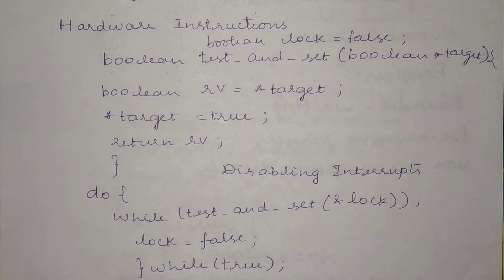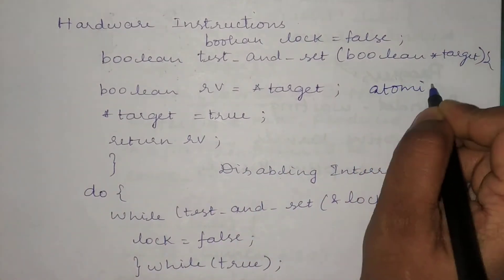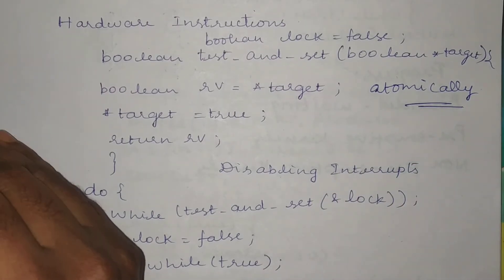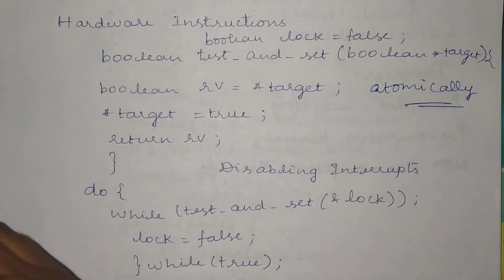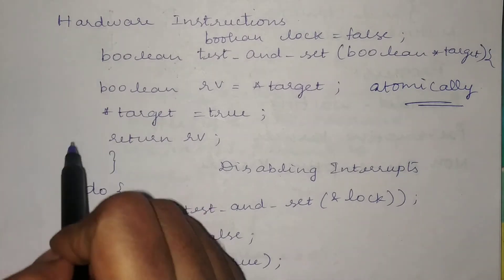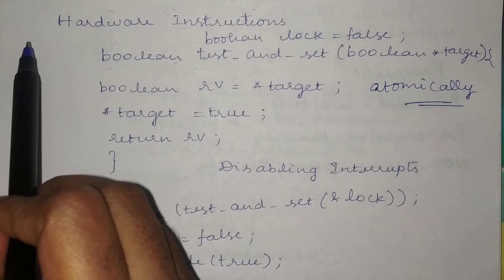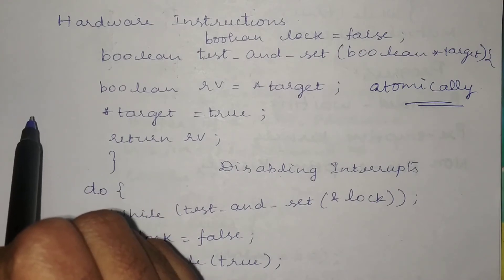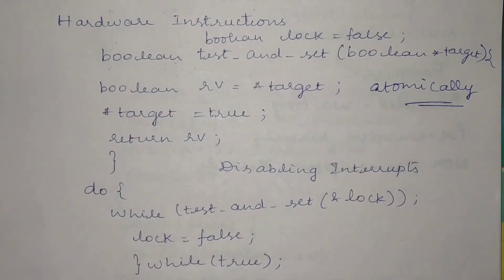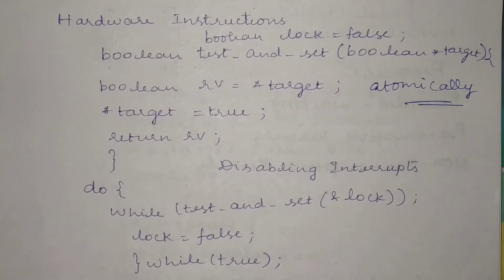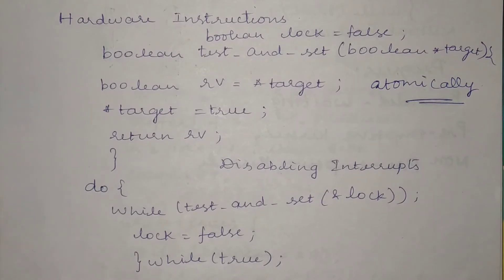Even though disabling interrupts is not feasible, we have a hardware solution: a set of hardware instructions that must be executed atomically. Atomically means once you start executing the first instruction, you should not be interruptable at all until the completion of the last instruction. For example, if you have three instructions in sequence, none of them should be interruptable in the middle. Execution of uninterruptable instructions in sequence is called atomic execution. All these instructions must execute atomically so we can achieve the correct, race-condition-free sequence.